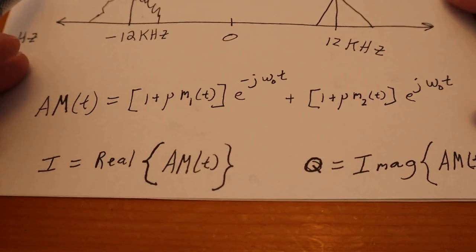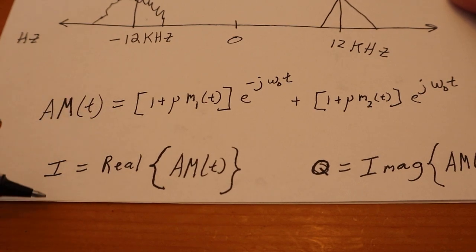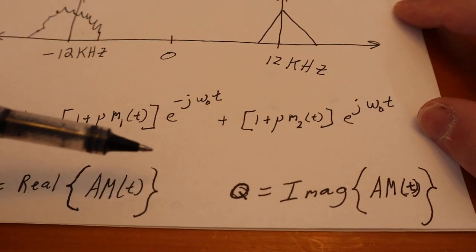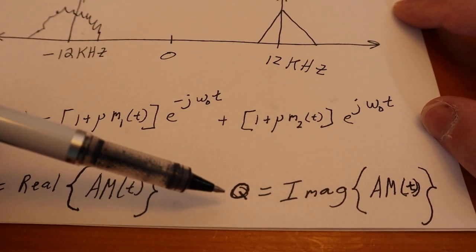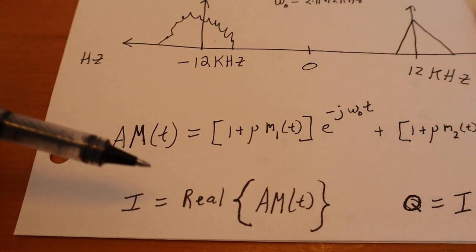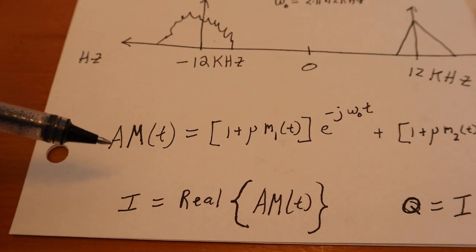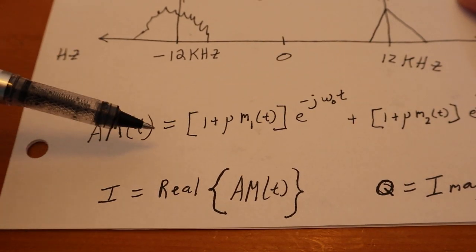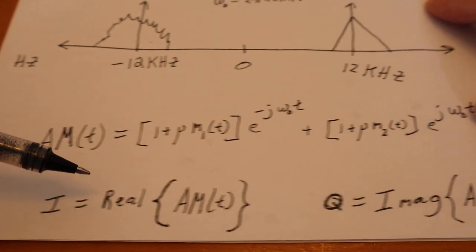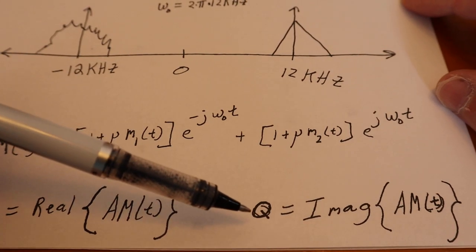Now the thing I want to take away from you is let's break up in this equation the real terms and the imaginary terms. The imaginary terms will designate as Q, and the real terms we will designate as I. So knowing that, we take all of the real numbers in this equation and define them as I, and all the imaginary numbers in this equation we're going to define them as Q.